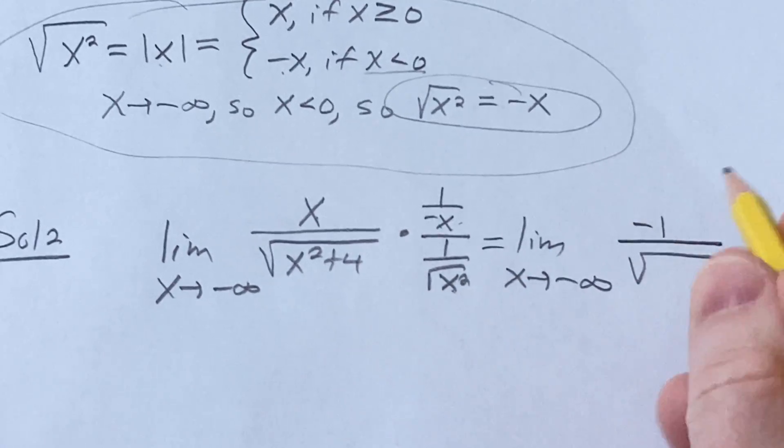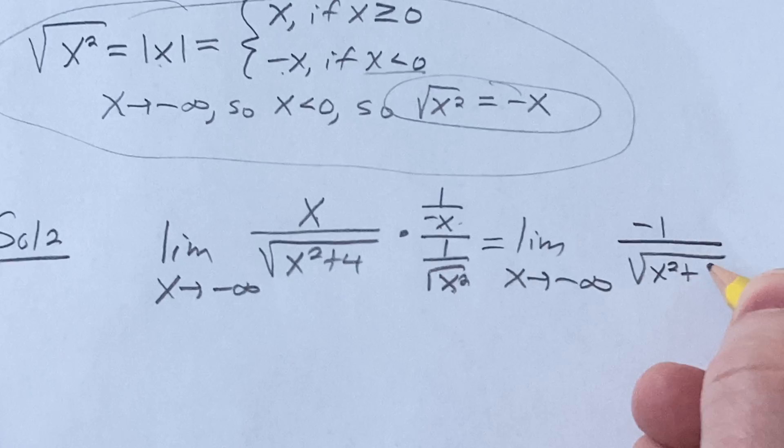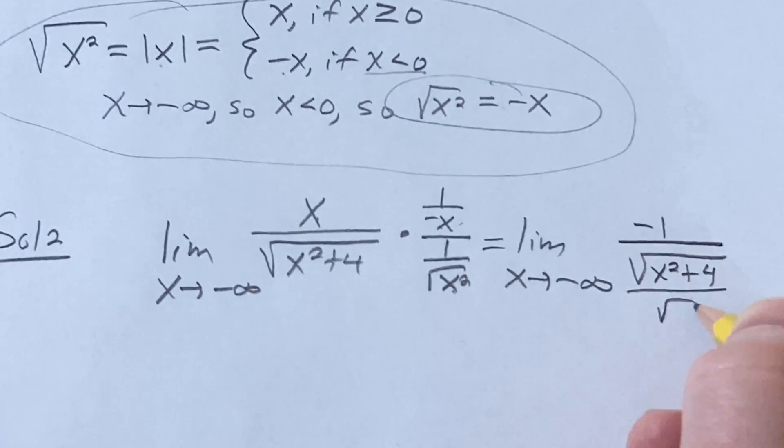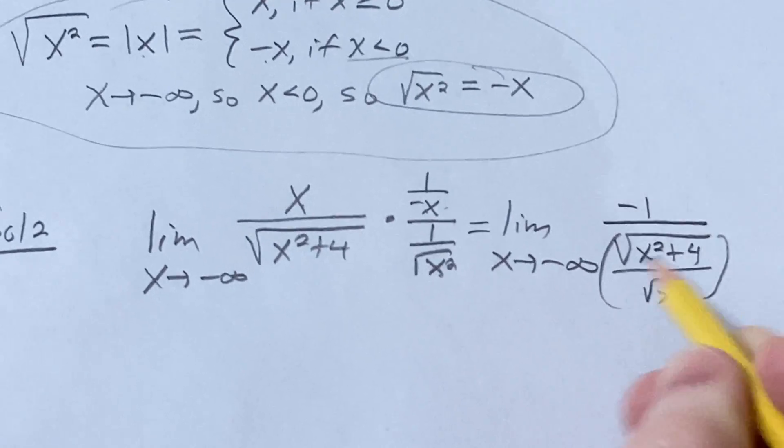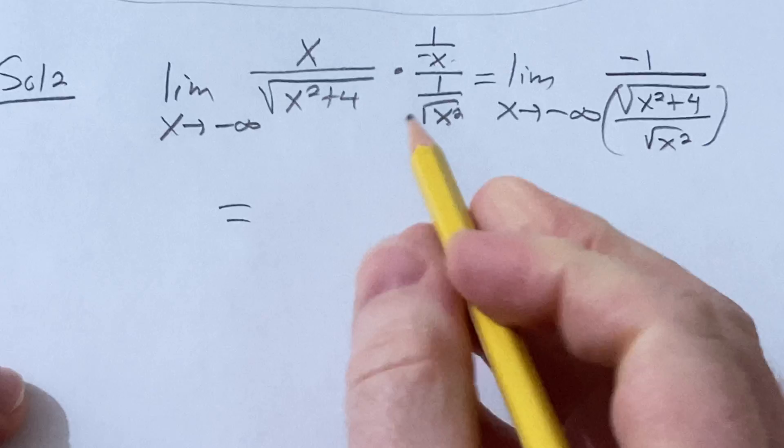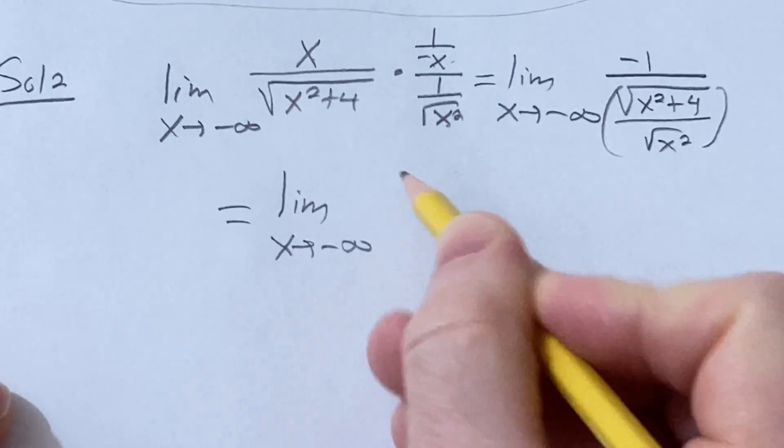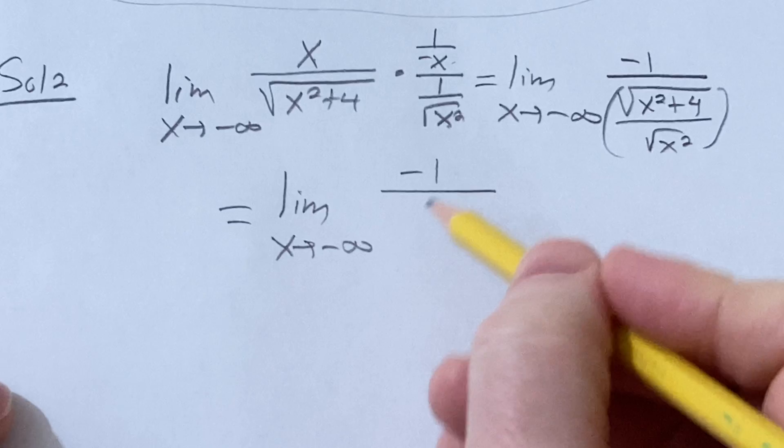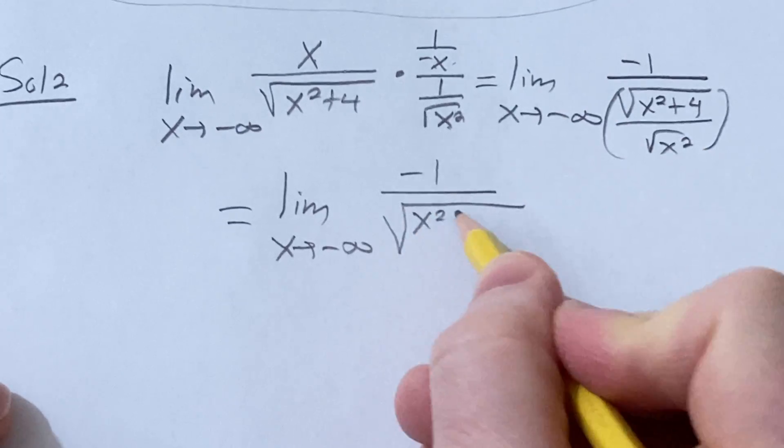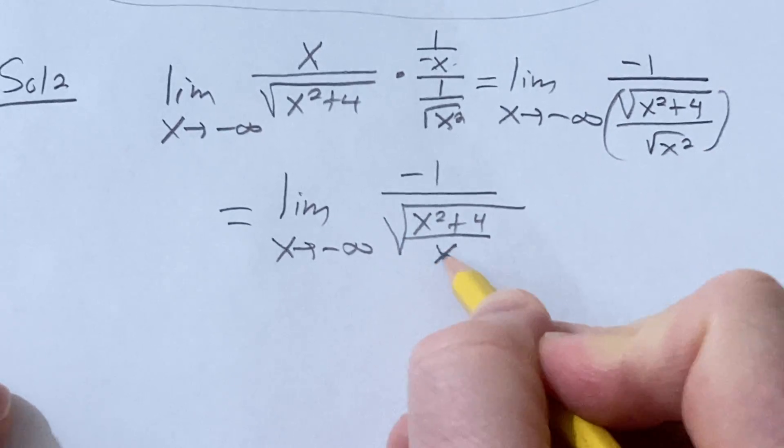And then here we can combine these. Well, I'll write it like this first and we'll combine them later. Okay, so now this is equal to the limit as x approaches negative infinity of negative 1 over, you can write that under the same square root now. This is x squared plus 4 over x squared.